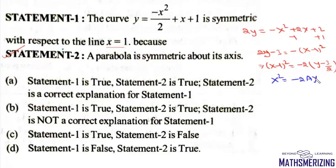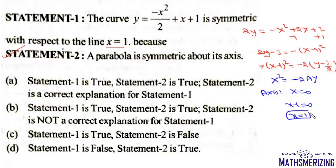For this standard form, the axis is the Y-axis, which is simply X equal to 0. So if I put capital X as 0, I get x minus 1 equals 0, which gives x equal to 1. So for statement 1, this parabola is symmetric about its axis and that axis is x equal to 1. So statement 1 is also correct.